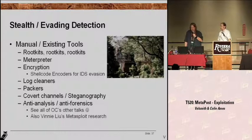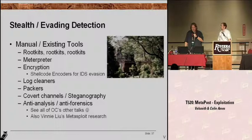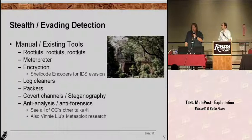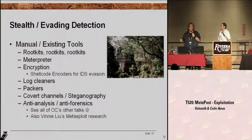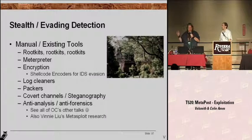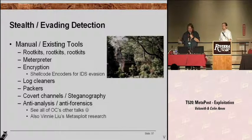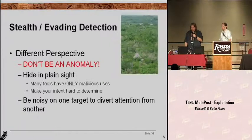There are lots of tools for evading detection. Rootkits is the big one everyone talks about. Meterpreter is a Metasploit payload and it's an amazing tool for evading detection — you should take a look at it. There's encryption like Shikata Ga Nai and some of the other encoders for exploits, which help with IDS evasion, and log cleaners and all the standard stuff. With your binaries as you're uploading your tools — one of the tools we're going to show later, while we were testing, got detected by AV and deleted. If you see any of our other Offensive Computing talks, all we ever talked about was anti-analysis techniques, and you can use some of those ideas.